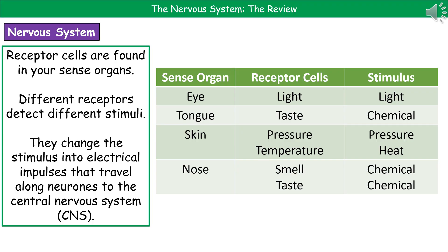When we're talking about receptor cells, we find them within the sense organs in our body, and we have different receptors for different stimuli. Considering the sense organs, the eye has light receptor cells that detect light — made up of cone cells and rod cells. The tongue is about taste, with the stimulus being different chemicals. The skin senses temperature and pressure. And our nose is about smell, again responding to chemical stimuli. I've given you a table on the right-hand side that gives a quick overview of this.